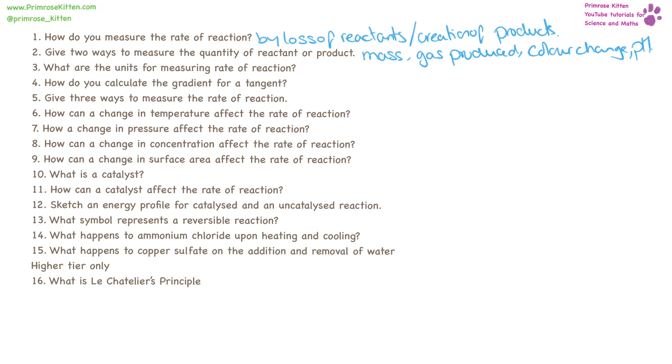The units are going to depend on what you're measuring. For example, if you're measuring gas produced, that is going to be volume over time. Basically, what we're looking at is the amounts measured over time. So if it's mass, then it's going to be grams over time. If it's gas produced, then it's going to be centimeters cubed over time. If it's color change, then it's going to be opacity over time, or if it's pH over time.